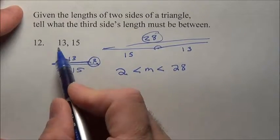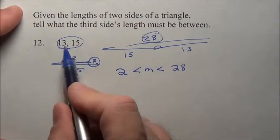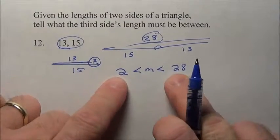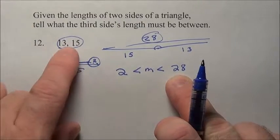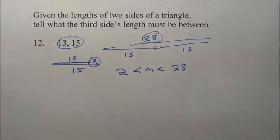The easy way to get the 2 and the 28: if you simply subtract 13 and 15 you get 2, and if you add them you get 28. We subtract them to get the first number, add them to get the second number, and our measurement is going to have to be somewhere between 2 and 28. There's problem 12.